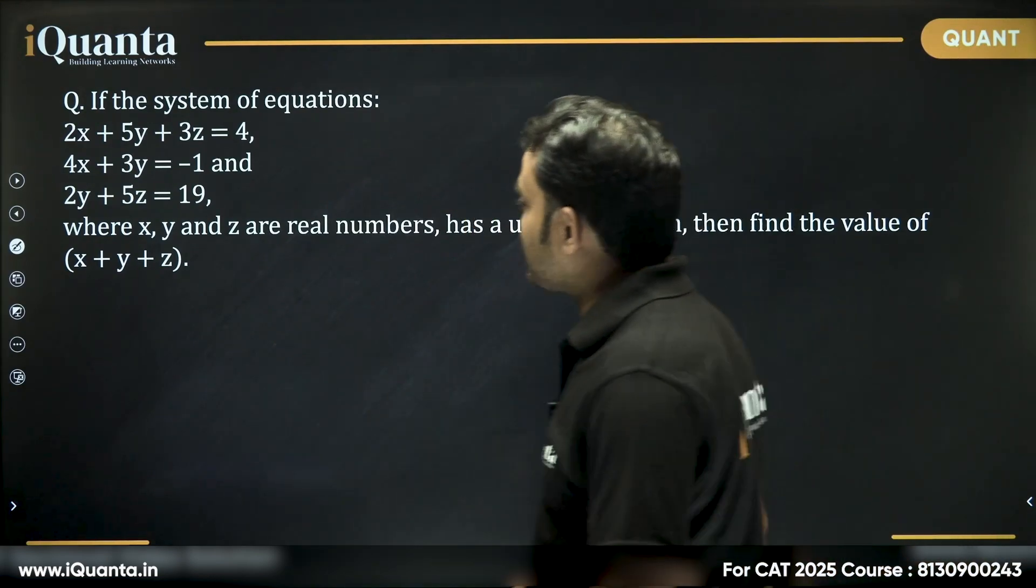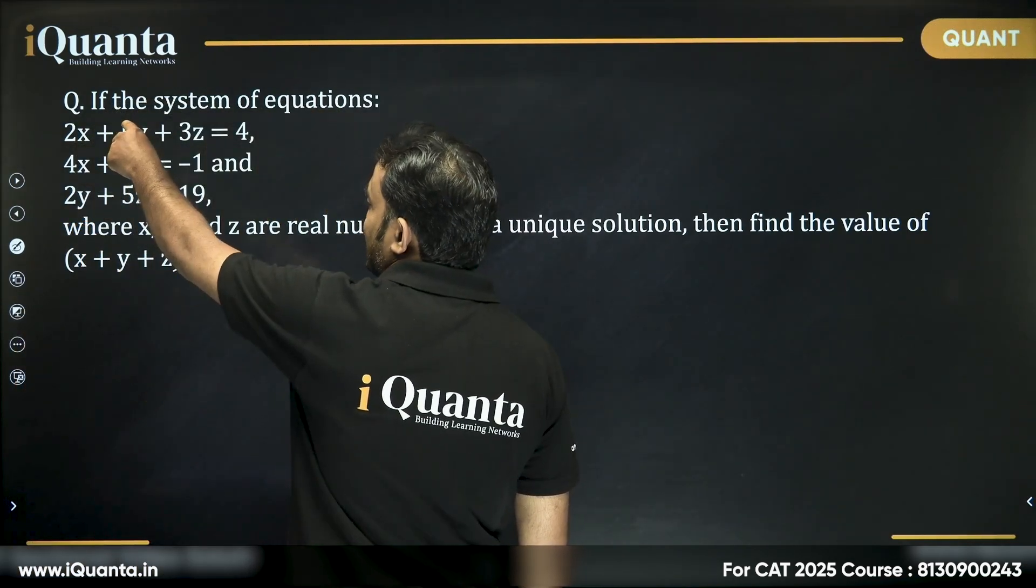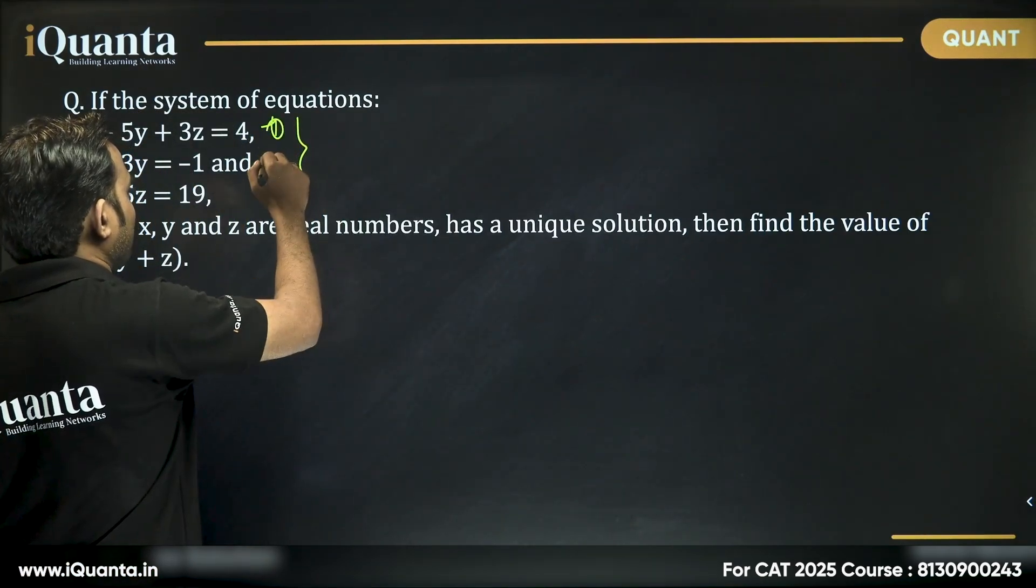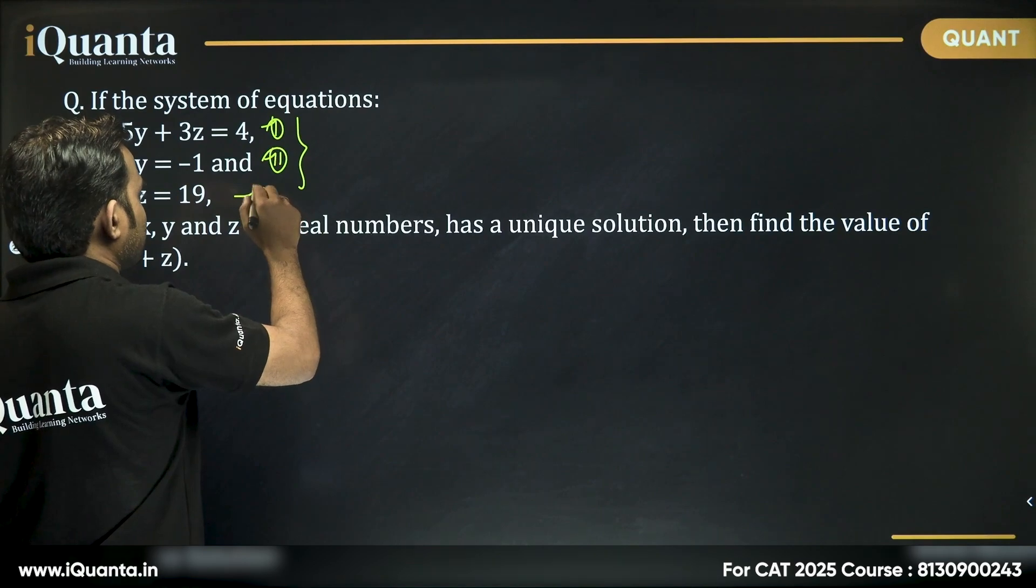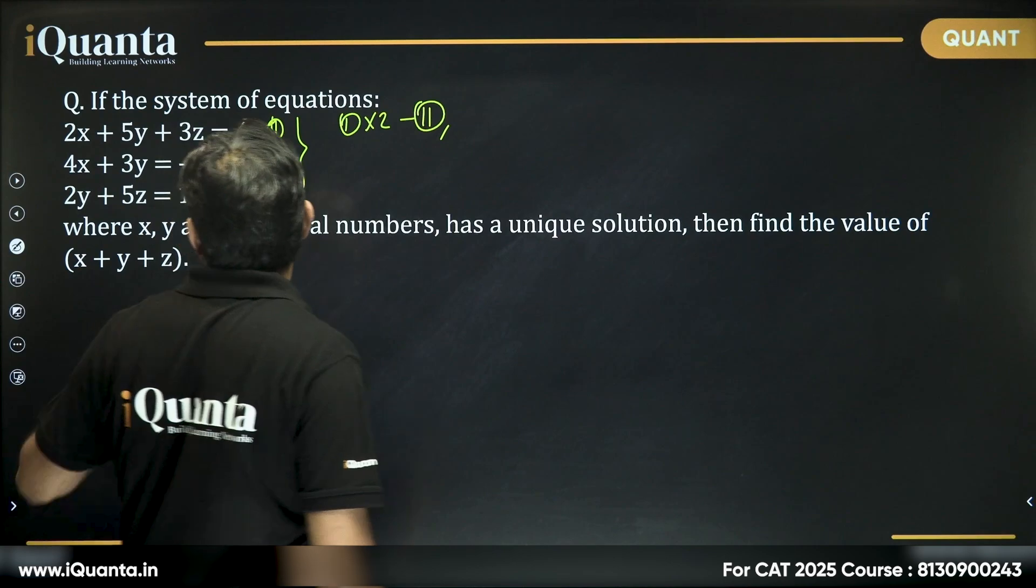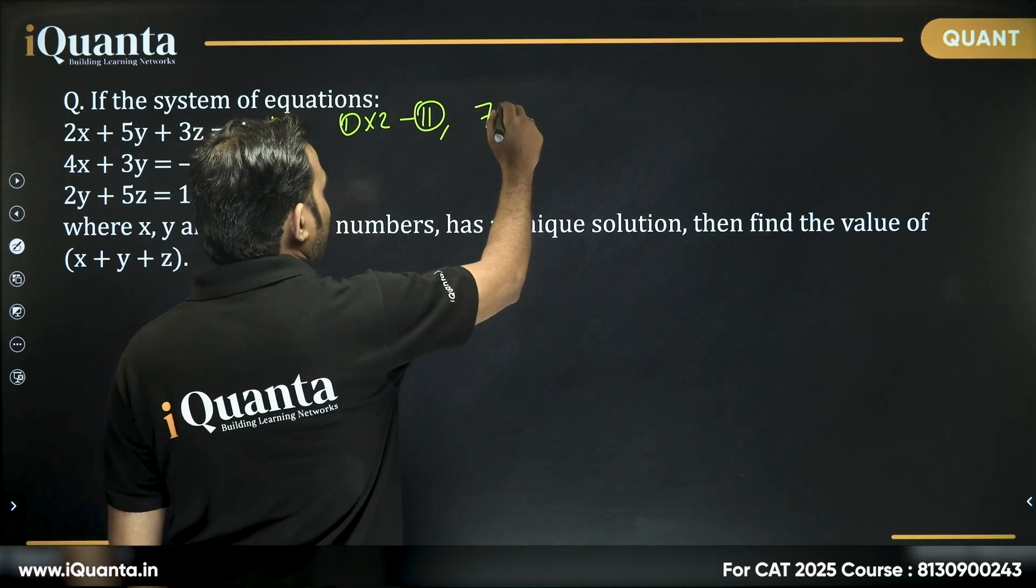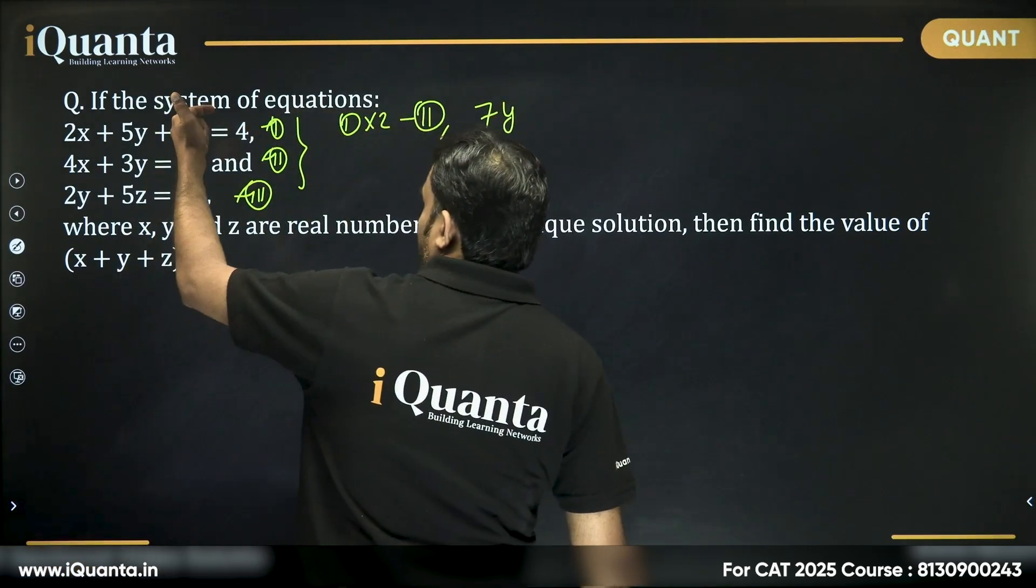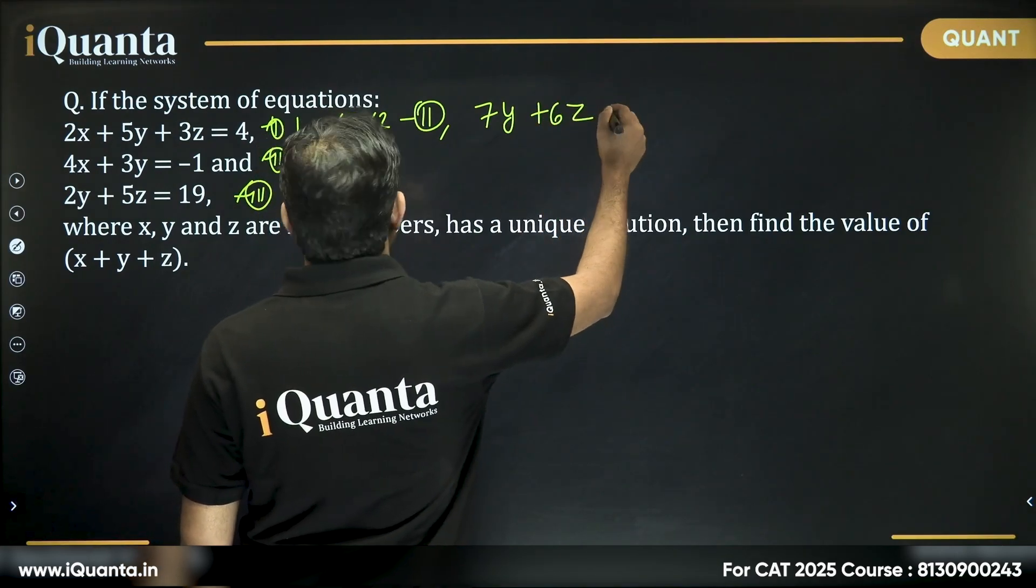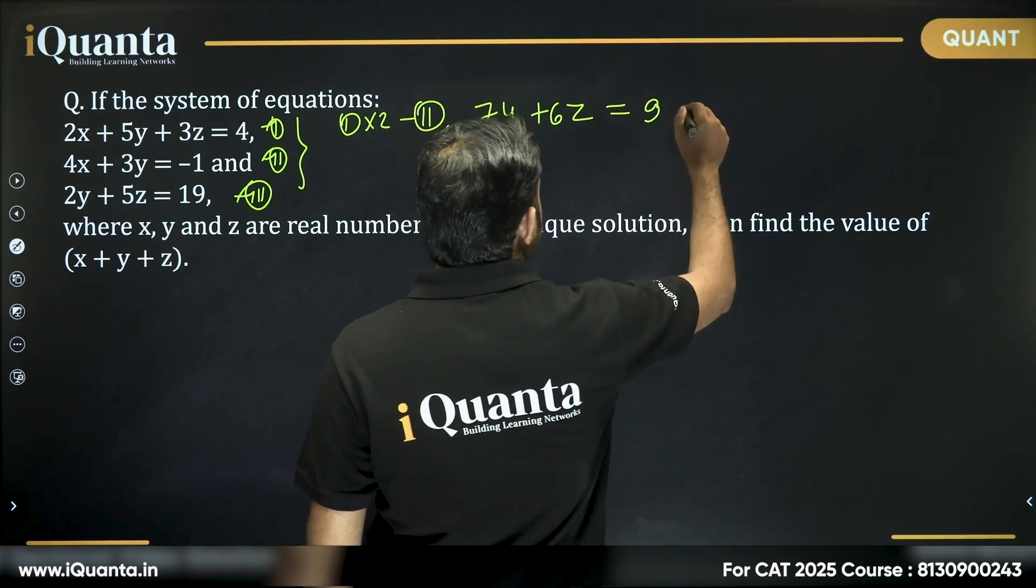We will have to use the elimination method. We already have y and z here. We can try eliminating x from these two equations. If this is equation 1, this is equation 2, and this is equation 3, then equation 1 times 2 minus equation 2: 4x minus 4x will cancel out. 10y minus 3y is 7y. Then 6z equals 8 minus (-1), which becomes 9. So 7y + 6z = 9 is our fourth equation.